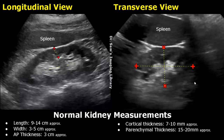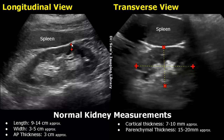This image shows the caliper placement for measurement of parenchymal thickness, which lies between 15 to 20 millimeters approximately. This image shows the measurement of cortical thickness of the left kidney, which lies between 7 to 10 millimeters approximately.